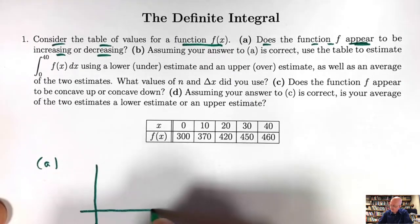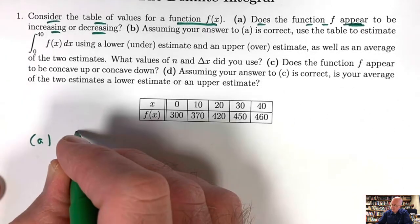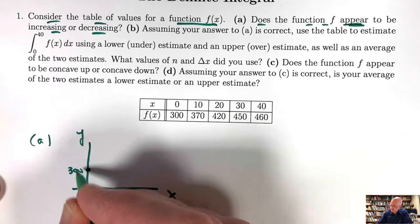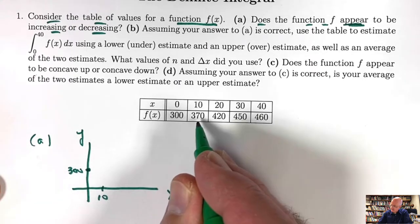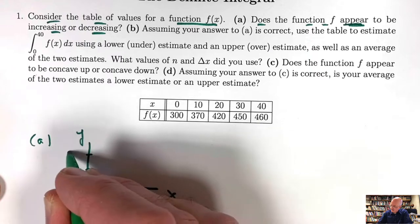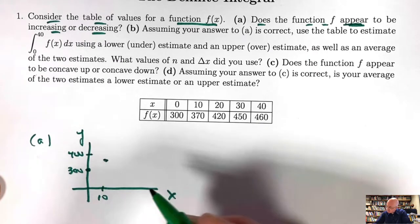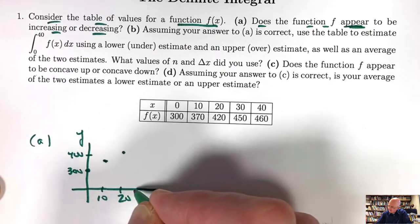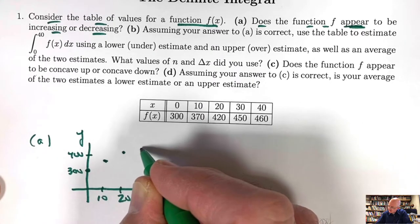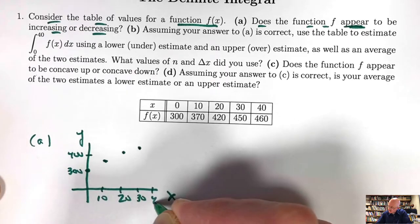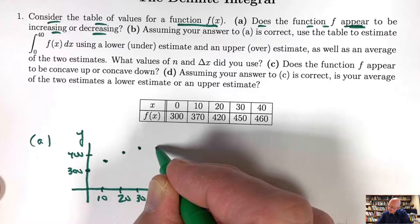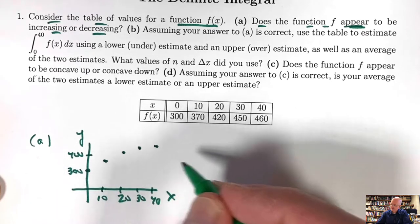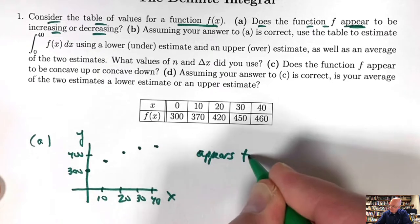Let's go ahead and graph what we see. x on the horizontal axis, y on the vertical axis. When x is 0, f of x is 300. When x is 10, f of x is 370. When x is 20, f of x is 420. When x is 30, f of x is 450. And when x is 40, we're up at 460. So the function has these data points — it looks like it's increasing. It appears to be increasing.